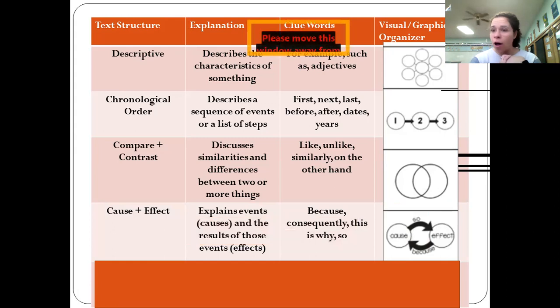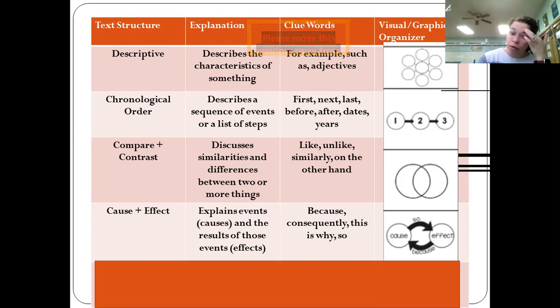Next, we have cause and effect. This explains events and then the results or the consequences that happen because of those events. Keywords include 'because,' 'consequently,' 'this is why,' or 'so,' things like that. Our graphic organizer shows that because this happened, this happened, and because this happened, or this happened because this happened.